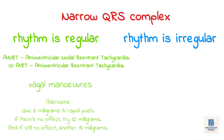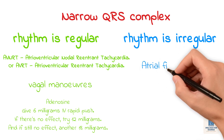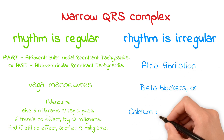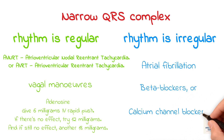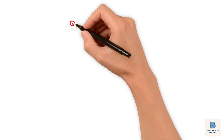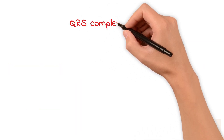If the narrow complex rhythm is irregular, it's likely atrial fibrillation. Here, the aim is rate control using beta blockers or calcium channel blockers like diltiazem — but avoid these in decompensated heart failure. Also remember, if the AF is ongoing, consider anticoagulation using the CHA₂DS₂-VASc score.